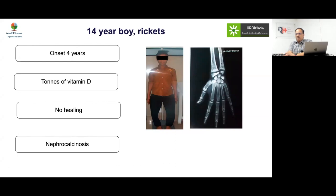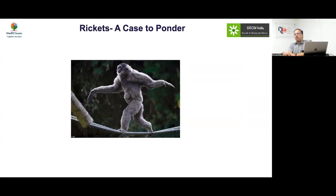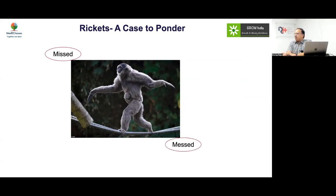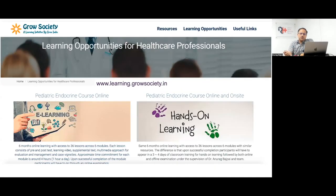If you have late-onset rickets with predominant lower limb abnormalities, normal PTH, and normal calcium, think of hypophosphatemic rickets. We must balance between not doing too much workup where it is not required, while not missing pathological cases. Rickets is overall common — usually nutritional — but refractory rickets may pose a significant challenge.